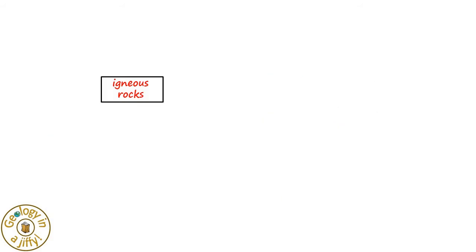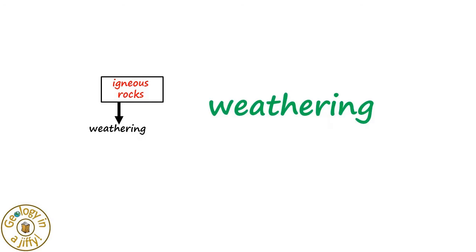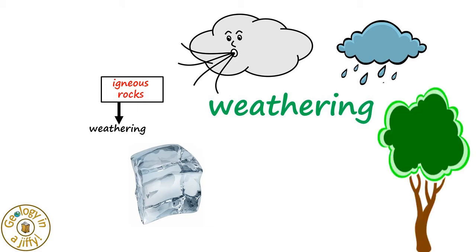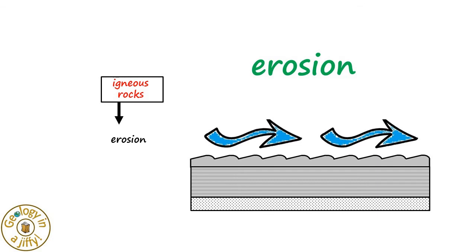Igneous rocks, exposed at the earth's surface, can then undergo weathering and erosion. Weathering is the process where rocks are broken down, whether by the action of ice, wind, and water — known as physical weathering — or by the roots of plants, known as biological weathering, or by the acids found in rainwater or rivers, known as chemical weathering. Erosion is the process of wearing away older rocks, such as by moving water, wind, or ice, these often carrying fragments of rocks that help further scour away the rocks.